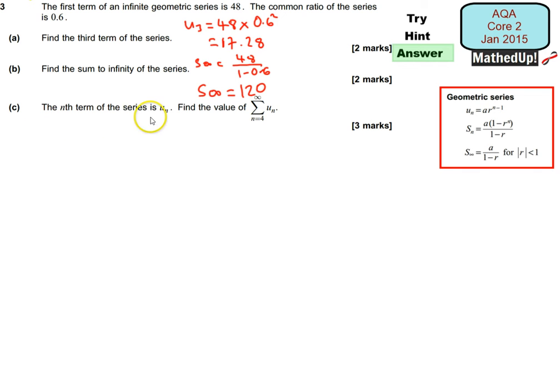The next part, the nth term of the series is UN and we want to find the value of this summation. So this summation is going to be equal to my sum to infinity take away the summation of my first three terms. So I'm just going to write that in a different way. The summation of my first three terms is going to be, I want to take off U1, U2 and U3. So that's going to be equal to, well, that we worked out earlier to be 120 take away. And my first term, U1,